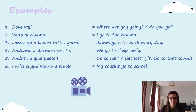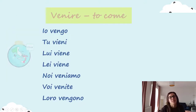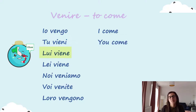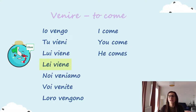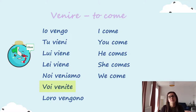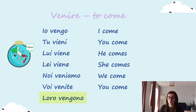Let's see now: venire — to come. Io vengo — I come. Tu vieni — you come. Lui viene — he comes. Lei viene — she comes. Noi veniamo — we come. Voi venite — you come. Loro vengono — they come.